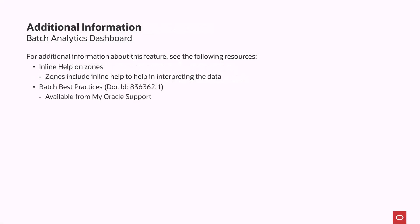Ensure you run the batch job and batch thread link snapshot jobs regularly to keep the snapshots up to date. Apart from the online help, for additional information see the inline help on each zone. You can also access the batch best practices documentation at the identifying number shown here, available from Oracle Support for additional advice. This concludes this presentation — thank you for watching.